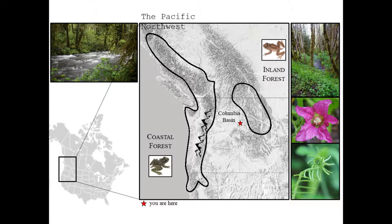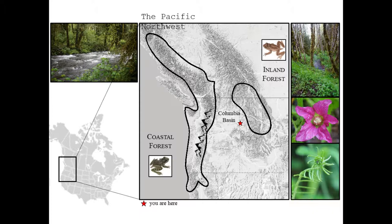Many of you may be familiar with the rainforest that exists along the Pacific coast — it's pictured there in the top left. It's this beautiful, green, lush, wet, incredibly biodiverse rainforest. And what you may not know is that the exact same rainforest exists in the inland, only about 60 miles east of where we are right now in Moscow, Idaho.